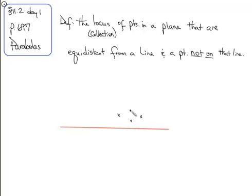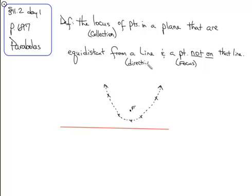For example, we have a point here where the distance to the focus equals the distance to the line, a point over here, one up here, and so on. If we piece all of these points together — there's an infinite number of them — what we get is our parabola. The point is called the focus, labeled F. The line is called the directrix, labeled DIR, and it's an infinite line. This point here is our vertex.